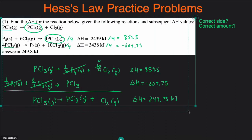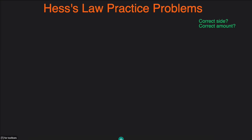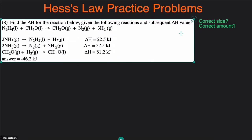What if we have three reactions instead of two? It will still be the same approach. We're going to look at the given final reaction and pick out a species that only appears in one of the given reactions. Maybe the first one we can focus on is N2H4. N2H4 only appears in one reaction. Then we ask ourselves: is this currently on the correct side? It is not — we want it on the reactant side, but it's currently on the product side. So that means I have to flip this.